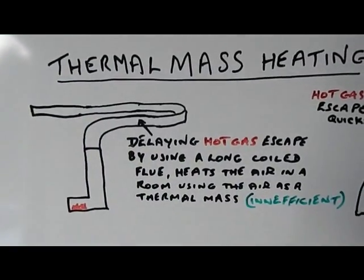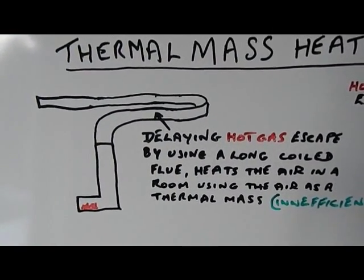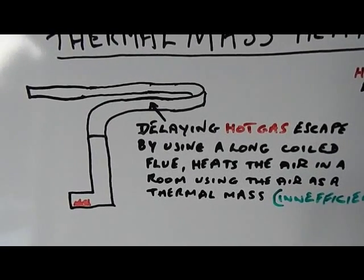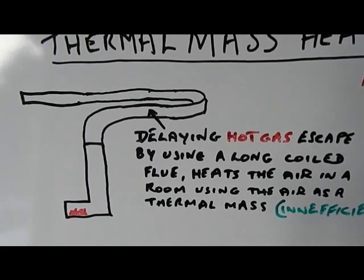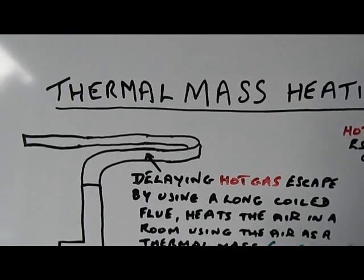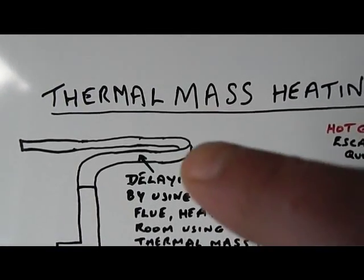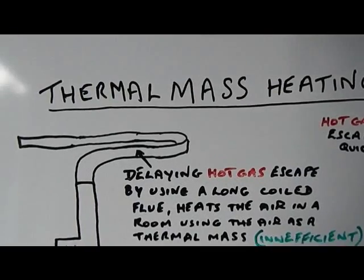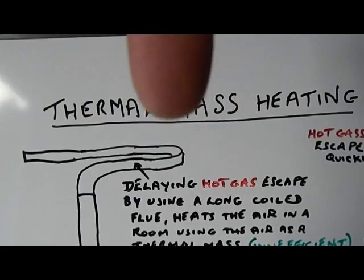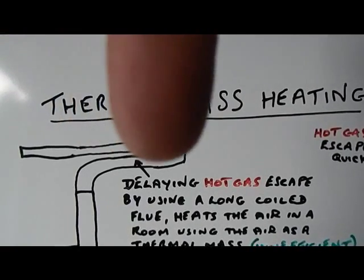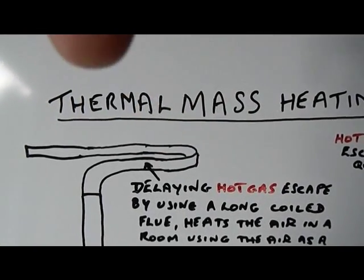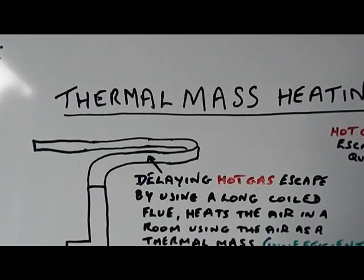Slightly more efficient is if you take a fire, in this case it's the L that I've drawn in here, and then you take a flue from the top of that, directly from the top of that, and then lead it in as large a coil as you possibly can. I mean, it comes, the flue comes in coils, so you can use a whole coil, that can be 10 meters long, in a room, and then you take it out as the exhaust.